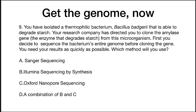Your research company has directed you to clone the amylase gene — the enzyme that degrades starch from this microorganism — and then overexpress it, because you're then going to use that as a product to generate sugar from starch. First, you decide to sequence the bacterium's entire genome before cloning the gene. You need your results as quickly as possible. Which method would you use?